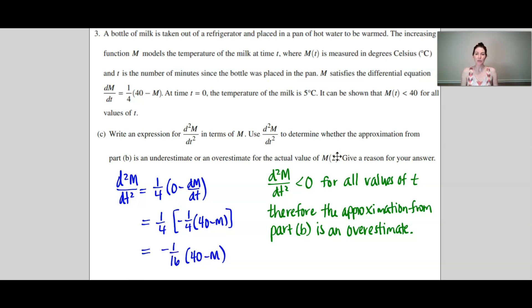Well now I need to use this to determine whether the approximation from Part B was an under or overestimate. To do that I need to determine if M is concave up or concave down. And by looking at the second derivative I can determine that.